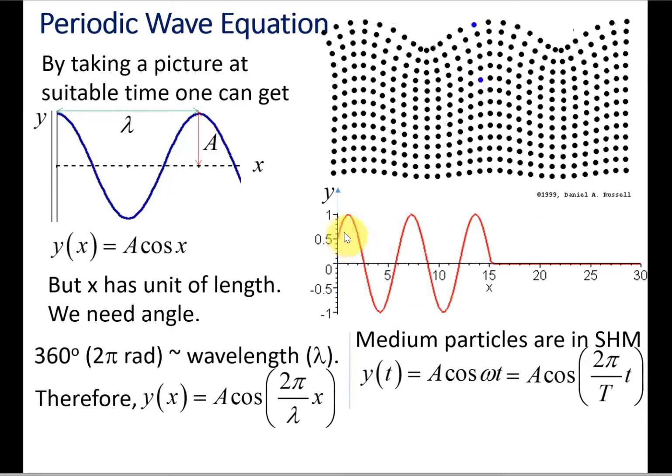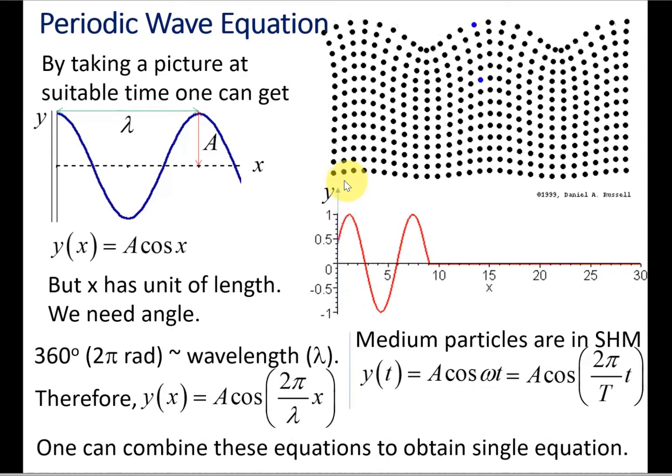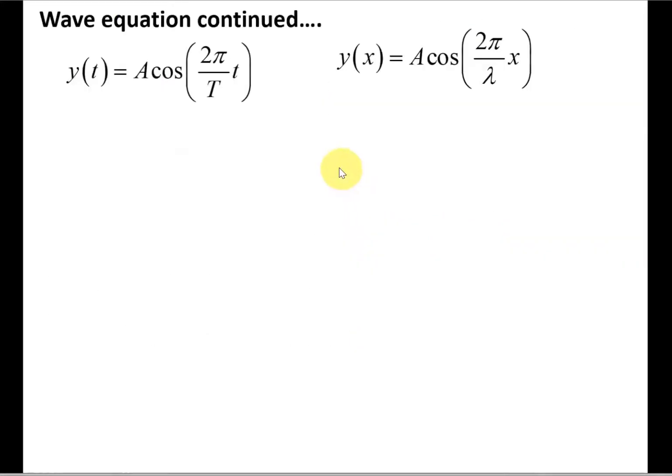Now we can combine these two equations to get an equation that has both position and time information when it is moving along. That's going to be the traveling wave equation. We can combine it, so there are two ways of combining it. One: subtract one from another inside the argument.